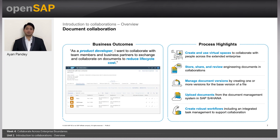Finally, the document collaboration. The business outcome states: as a product developer, I want to collaborate with team members and business partners to exchange and collaborate on documents to reduce lifecycle costs. The process highlights are creating and using virtual spaces to collaborate with people across the extended enterprise, storing, sharing and reviewing engineering documents in collaboration, managing document versions by creating one or more versions of the base version of a file, uploading documents from the document management system of SAP S/4HANA, and creating robust workflows including integrated task management to support collaboration.